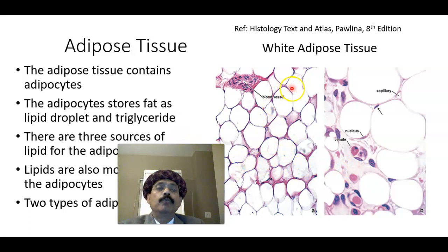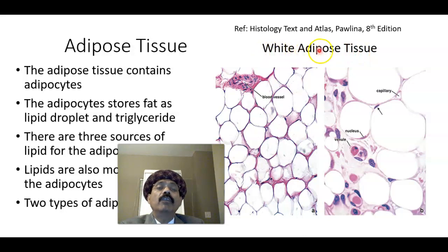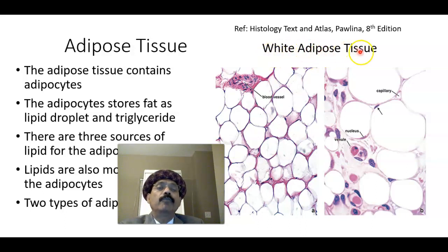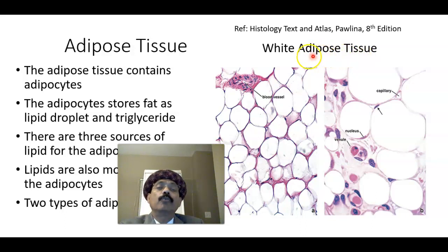We have two types of adipose tissue: white adipose tissue and brown adipose tissue. White adipose tissue is present in the adult, and in the newborn, brown adipose tissue is present. White adipose tissue forms around 20% of the body weight of the adult male and around 25% of the adult female.